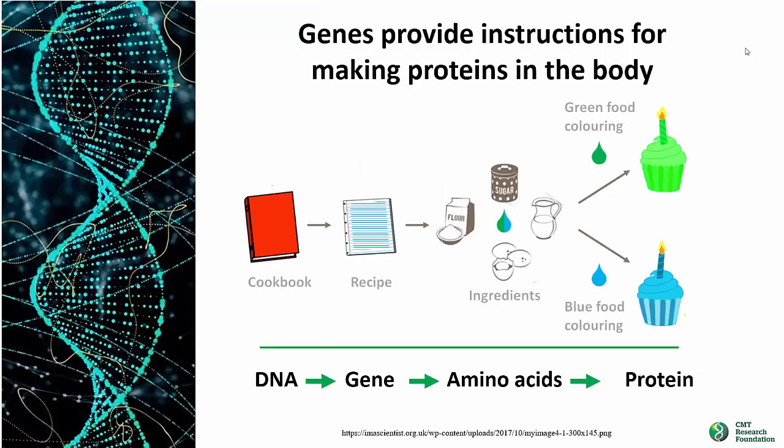You're familiar with how a recipe gives instructions for mixing different ingredients — you can end up with brownies or tuna salad. Change the recipe and you'll end up with cookies rather than brownies, or chicken salad rather than tuna salad. In the same way, genes provide instructions for making proteins. Proteins are made up of amino acids, and the order of the amino acids determines what kind of protein it is and the ability of the protein to carry out its functions.